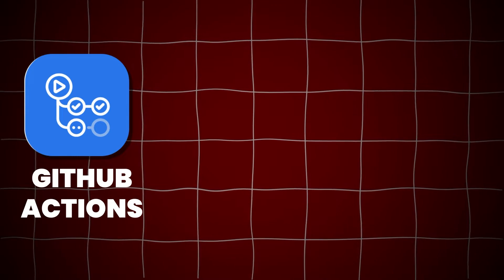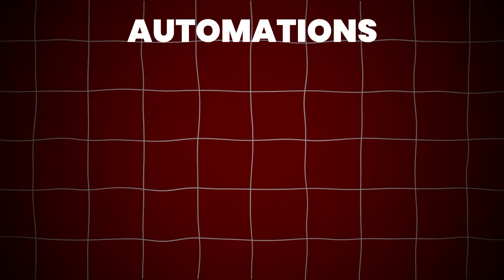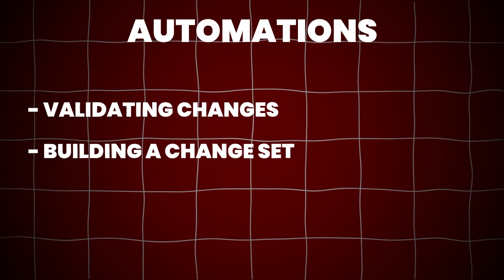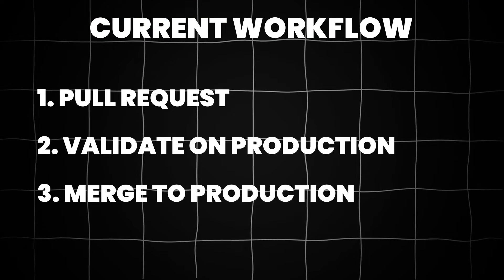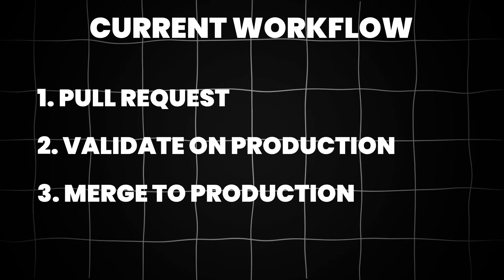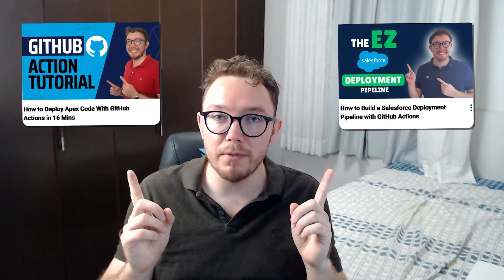GitHub Actions is a scripting language that allows you to automate DevOps processes. You can use events in a Git repo — like opening a pull request or pushing a commit — to trigger automation. From here, automation like validating changes, building a change set, and running code analysis can all be done automatically. My current workflow involves opening pull requests to stage changes, then merging the pull request to push to production. This has been a huge time-saver. If you want to learn more about GitHub Actions in Salesforce, check out some of the videos that I made.